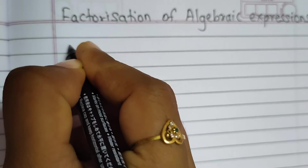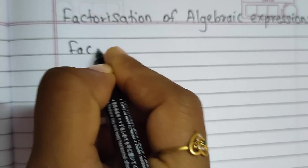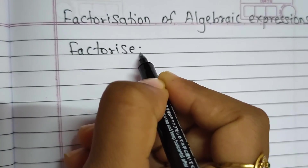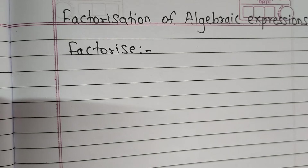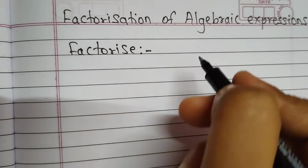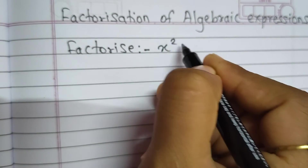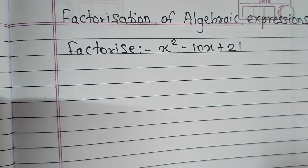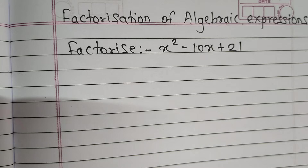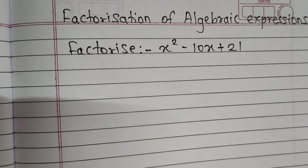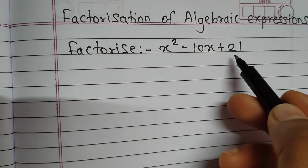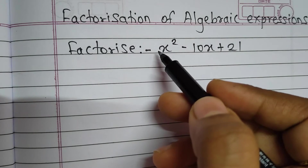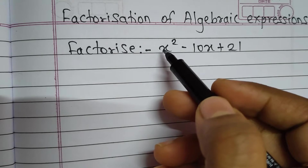Factorize x² minus 10x plus 21. Now, what we have to do here? We have 21 and we have minus 10. There is no number with x², so the coefficient is 1.